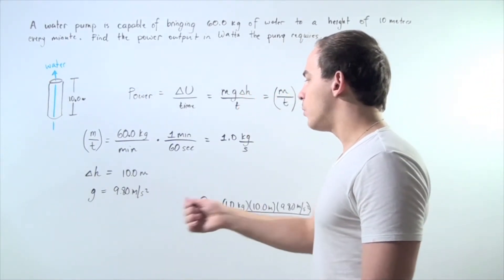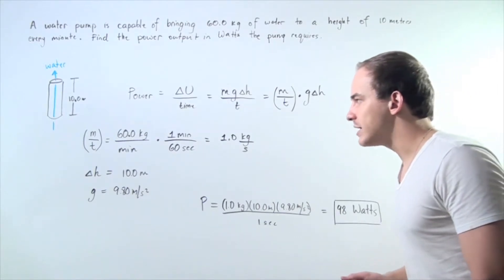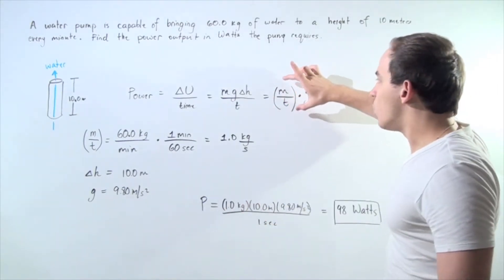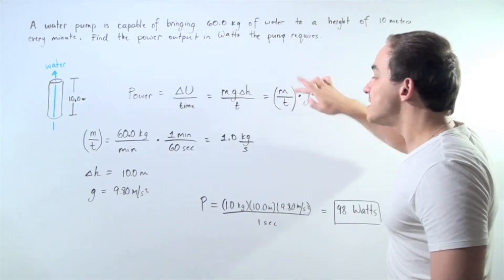g is equal to 9.80 meters per second squared. Let's find what the kilograms per second is.